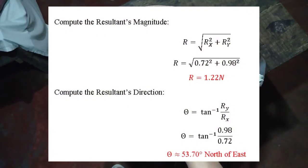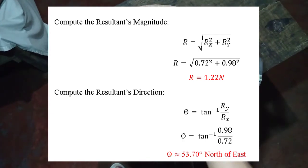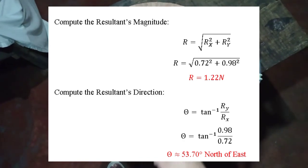And now, if we calculate the resultant's magnitude, we have 1.22 newtons in its direction.